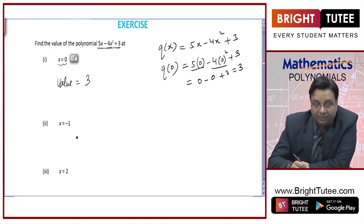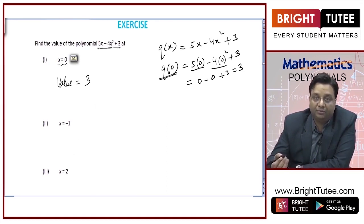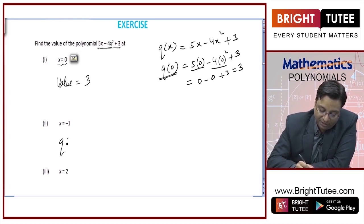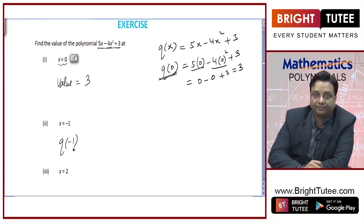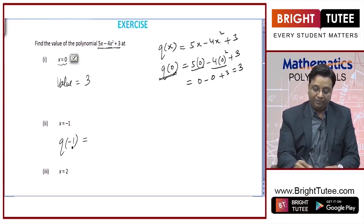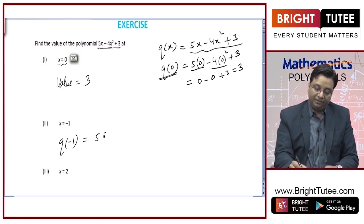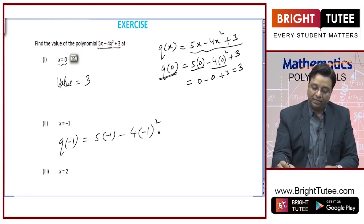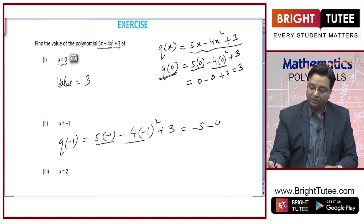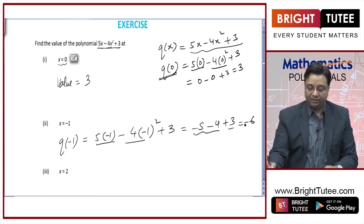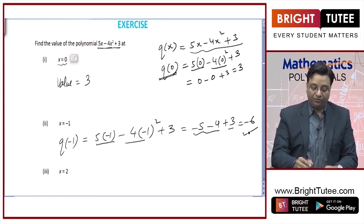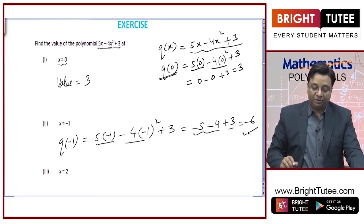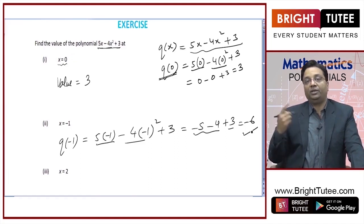In the next parts I will write q of that number. In this part I need to find q of negative 1. So let me replace x by negative 1: 5 into minus 1 minus 4 into minus 1 squared plus 3. It will give me minus 5, this is minus 4 plus 3. So minus 9 plus 3 is minus 6. That is the answer — q of negative 1, the value of polynomial at minus 1.